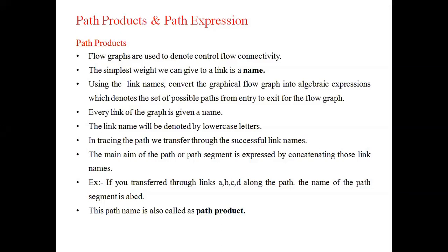The path is also called a flow graph, which consists of links from one node to another node, each containing a name. For example, 'a' is the name of one link, 'b' is the name of the next link, and 'a' to 'b' is the path. Every link of the graph is given a name, denoted by lowercase letters like a, b, c.